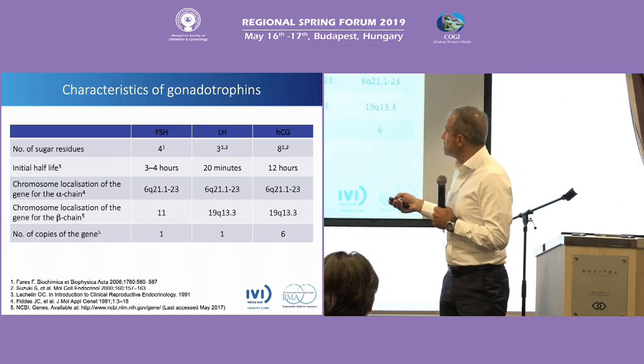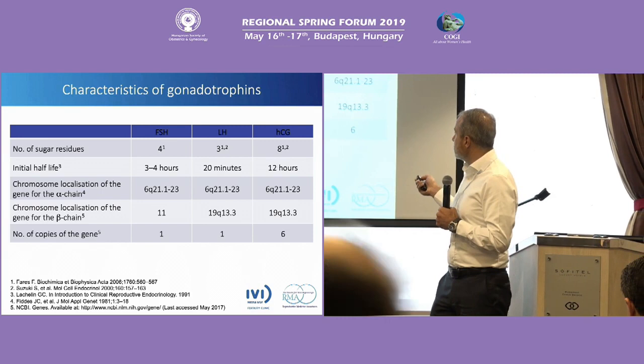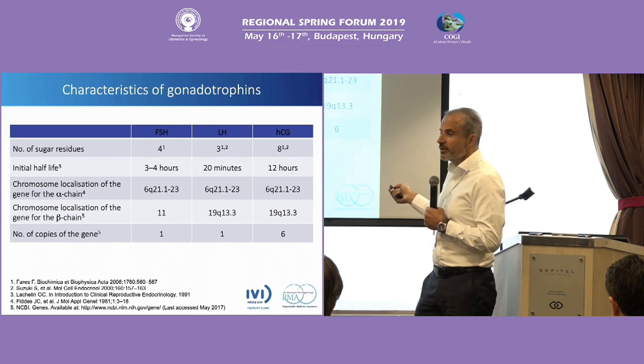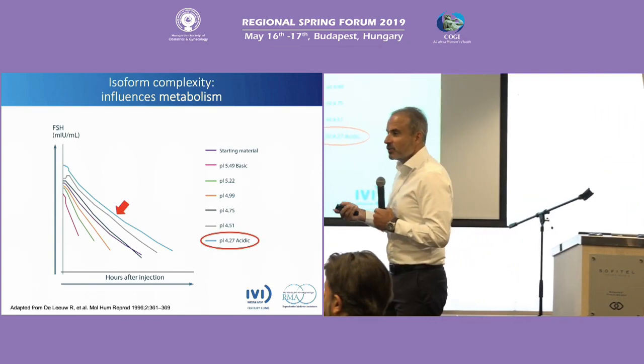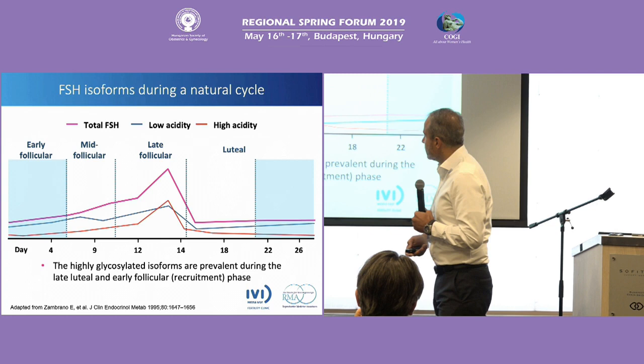If you take a look at where these hormones are produced, the number of sugar residues differs significantly — for example, hCG has many more sugar residues than LH. The half-lifetime differs. Between FSH, LH, and hCG, the alpha chain is on the same chromosomal location, but the beta chain of FSH is at a different location. Based on the acidity, there is also a difference in half-lifetime: the higher the acidity, the longer the activity of the FSH molecule.